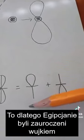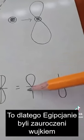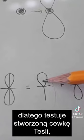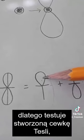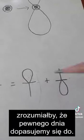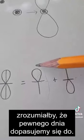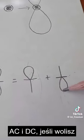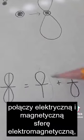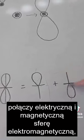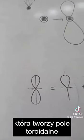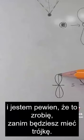This is why the Egyptians were infatuated with the Ankh. Two Ankhs give you the flat Earth cosmology. This is why Tesla created his Tesla coil to look like an Ankh — because he understood that one day we would align the two: the AC and the DC, if you will. The dielectric current will come together, the electric and the magnetic — an electromagnetic sphere that creates the toroidal field.